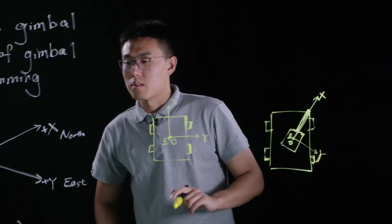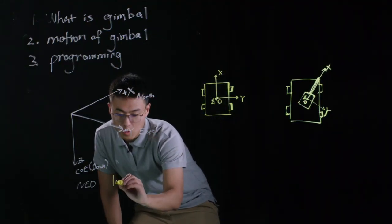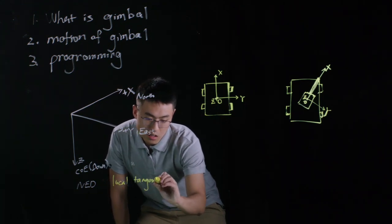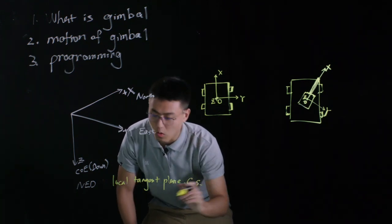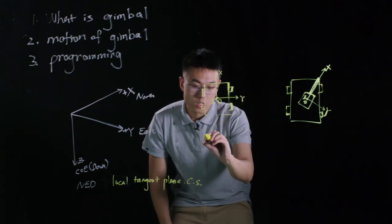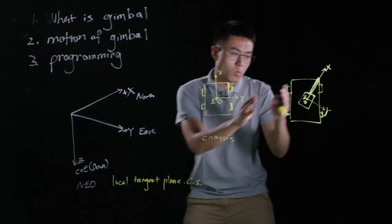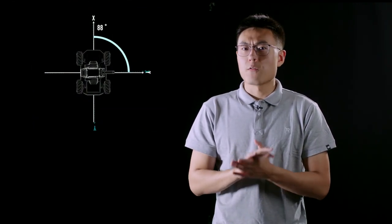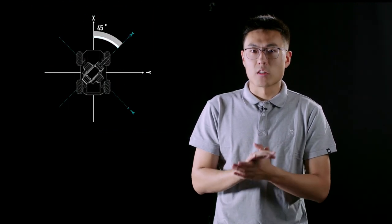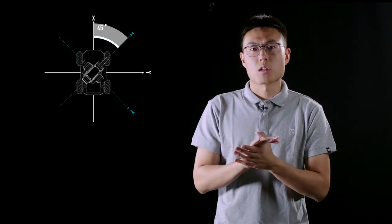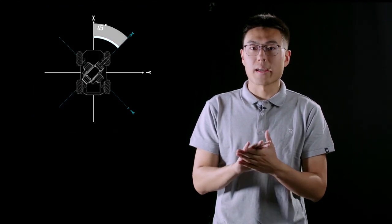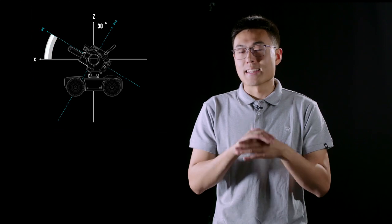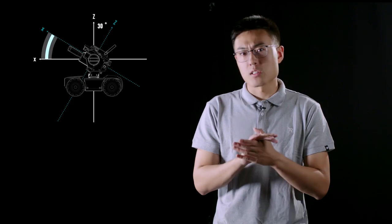So now we have three coordinate systems: the local tangent plane coordinate system (NED), the chassis coordinate system, and the gimbal coordinate system. With these three coordinate systems, we can accurately define the yaw angle and the pitch angle. When the gimbal rotates 45 degrees around the z-axis of the gimbal coordinate system, the x-axis of the gimbal coordinate system and the x-axis of the local tangent plane coordinate system form an angle of 45 degrees — that is the yaw angle. When the gimbal rotates 30 degrees around the y-axis of the gimbal coordinate system, the z-axis of the gimbal coordinate system and the z-axis of the local tangent plane coordinate system form an angle of 30 degrees — that is the pitch angle.